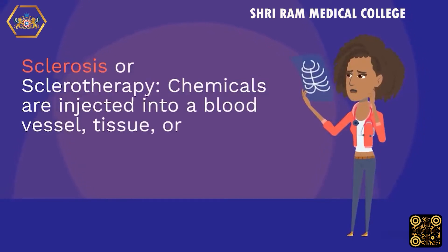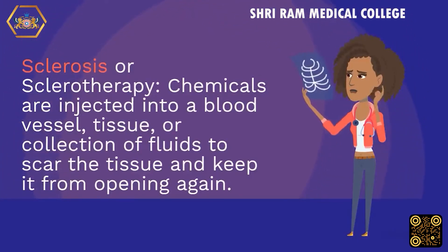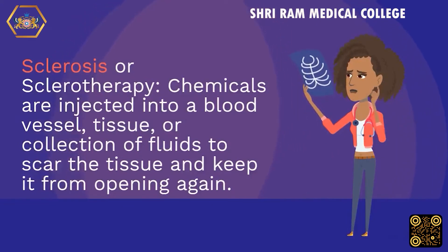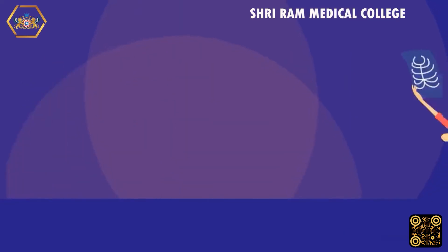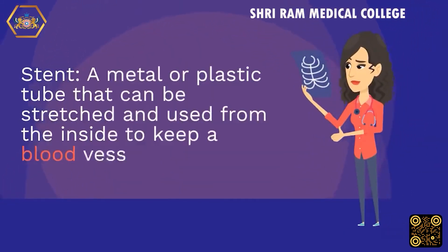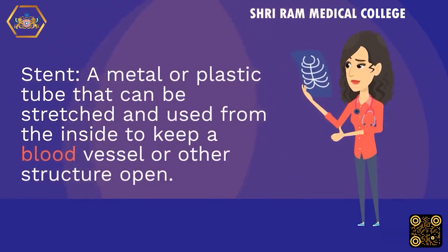Sclerosis or sclerotherapy: chemicals are injected into a blood vessel, tissue, or collection of fluids to scar the tissue and keep it from opening again. Stent: a metal or plastic tube that can be stretched and used from the inside to keep a blood vessel or other structure open.